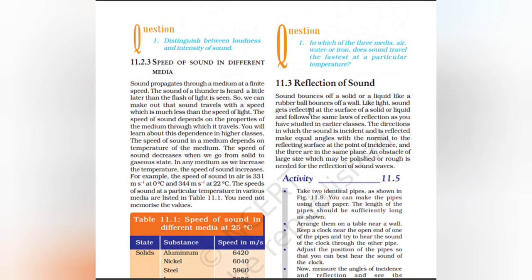Reflection of sound: Sound bounces off a liquid or a solid like a rubber ball bounces off a wall. Like light, sound gets reflected at the surface of a solid or liquid and follows the same laws of reflection. The direction in which the sound is incident and is reflected make equal angles with the normal to the reflecting surface at the point of incidence, and the three are in the same plane. An obstacle of large size, which may be polished or rough, is needed for the reflection of sound waves.